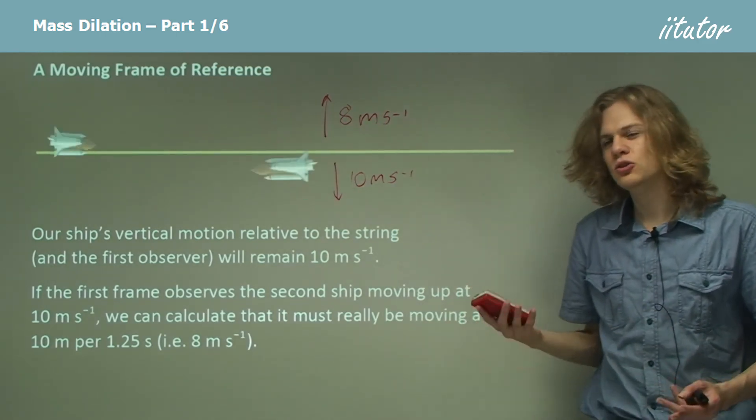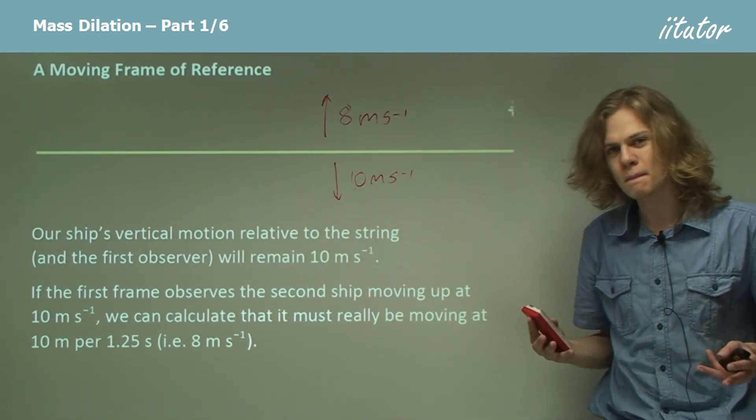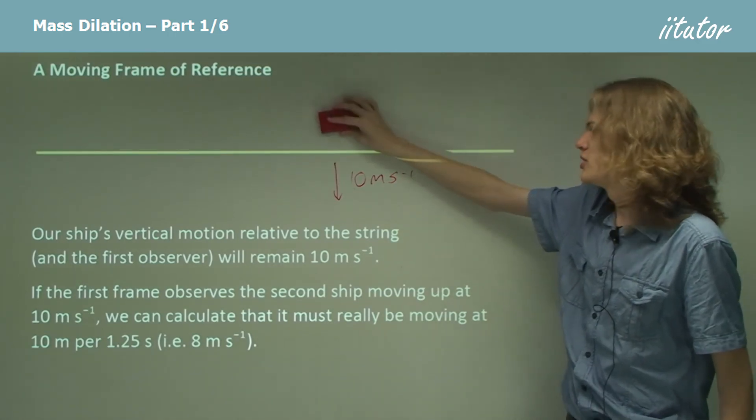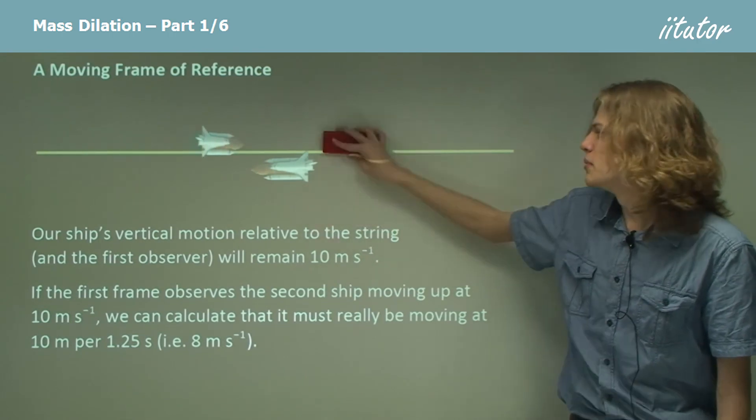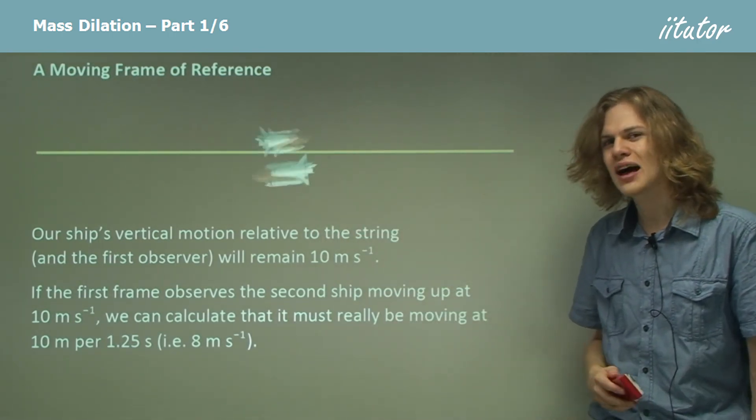So how do we explain this if we still want to keep conservation of momentum? Well, we can't change the velocity. But what else does momentum depend on? That's right, mass.